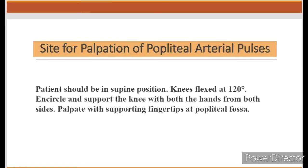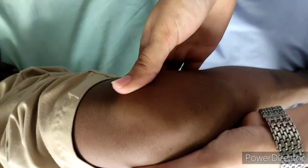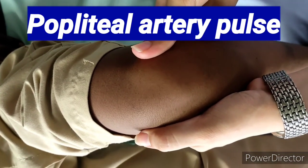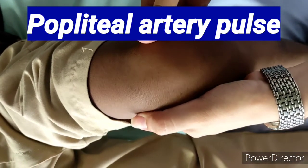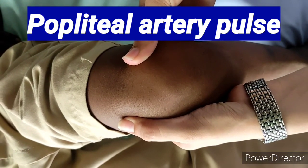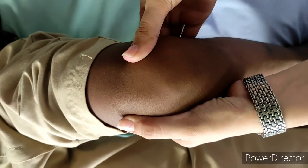For palpation of the popliteal artery, the patient should be in supine position with the knee flexed at 120 degrees. We encircle and support the knee with both hands from both sides and palpate with the supporting fingertips at the popliteal fossa. In this video you can see I am palpating the popliteal artery with the knee at 120 degrees using both-hand fingertip technique.